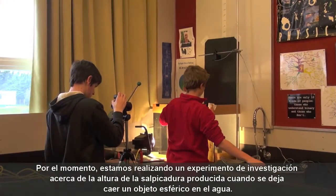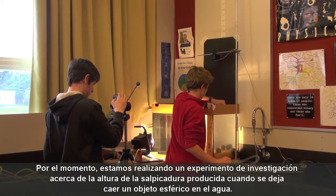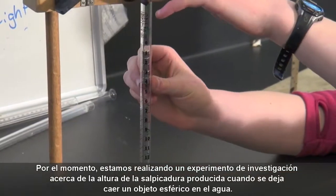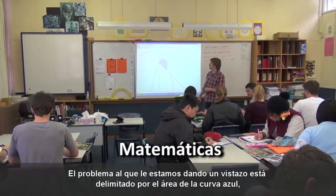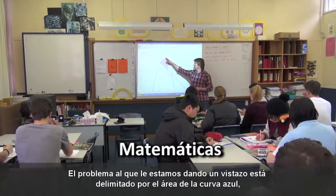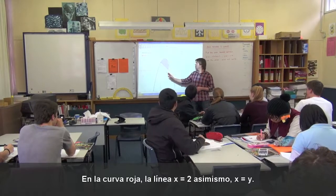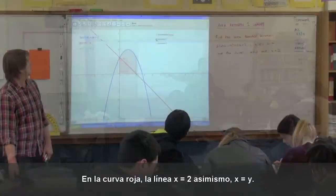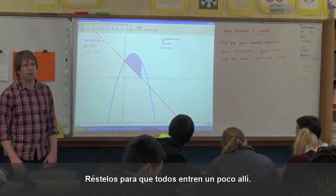These guys are doing an experimental motion investigation to look at the height of the splash when you drop a spherical object in the room. And the problem we're going to look at is the area bounded by this blue curve, the red curve line, to x equals the y-axis. Subtracting that will get that bit in there.